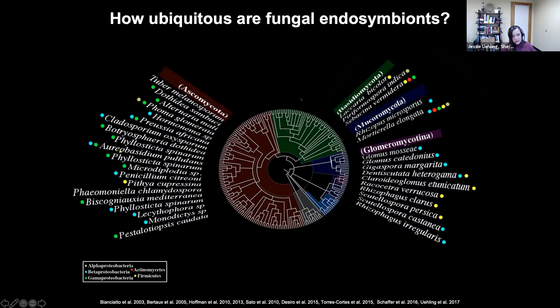There seem to be some patterns emerging, though we need more data to assess that robustly. What we can be certain about is that these endosymbionts as a phenomenon are fairly widespread and underappreciated, and that groups like the Mucoromycota — which is what I'm going to talk about today — have a really special relationship with bacteria and endosymbionts that live inside of their cells.